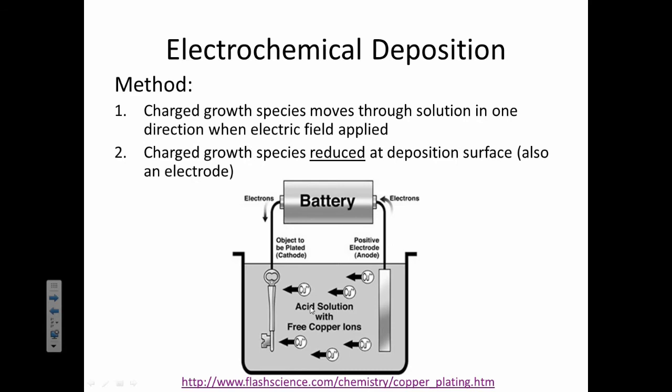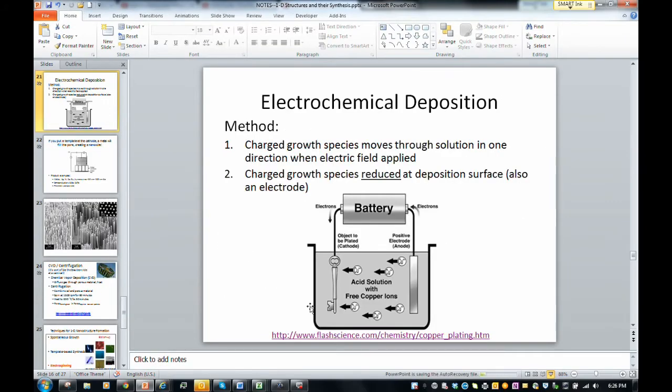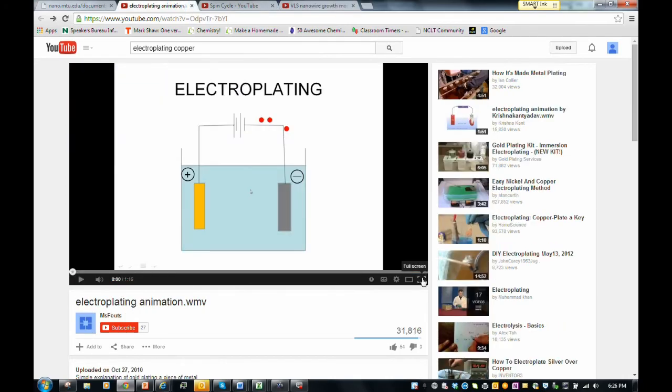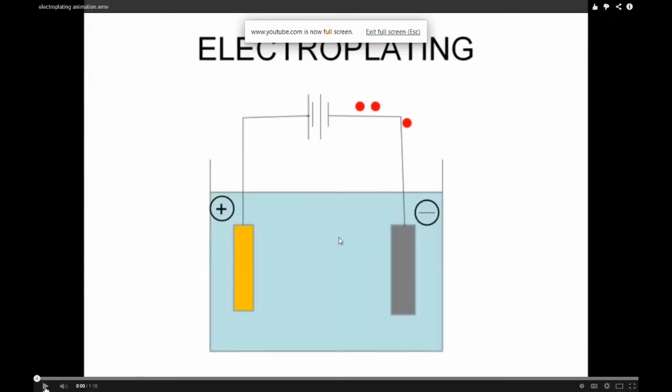Let's talk about this. What you need for this method is something that's going to move through a solution and be attracted basically toward the cathode, which has the negative charge. At the cathode, there's going to be a reduction. AP chem people, you've probably learned all about this. In order to keep this plating happening, you need an electrode that's going to put some more of those ions back into solution. Let's watch a little video of this happening. This is about a minute long.